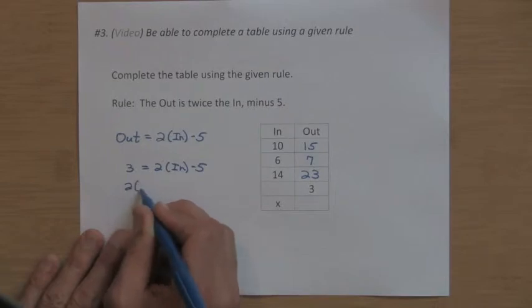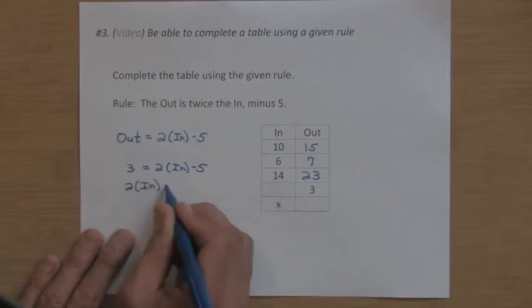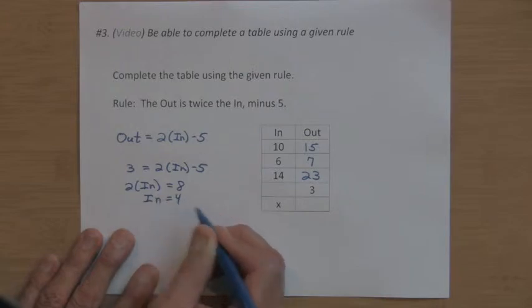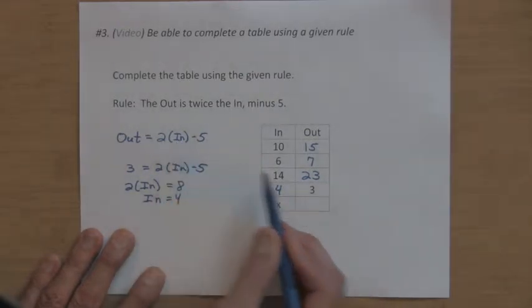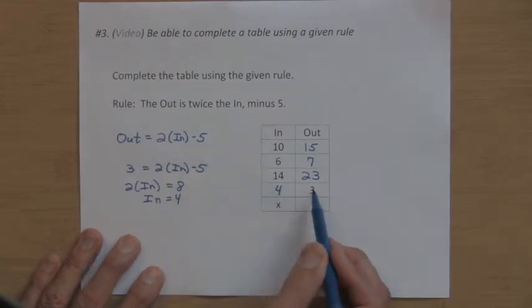And if twice the in has to equal eight, then the in has to be four. So I start with four. And if you check that, it works out. Two times four is eight. Eight minus five, there's my three.